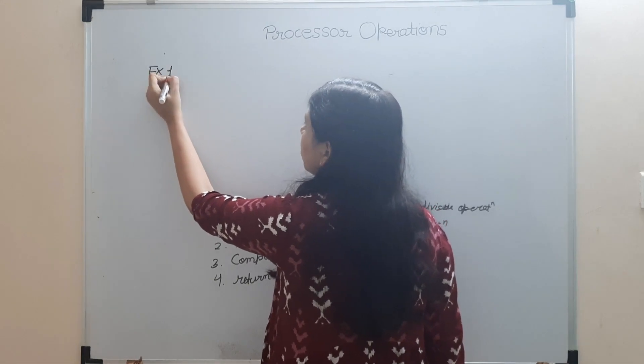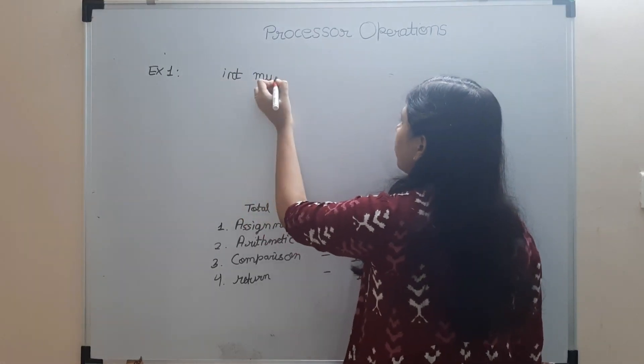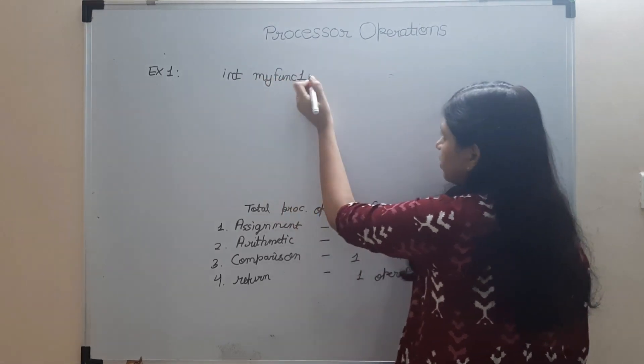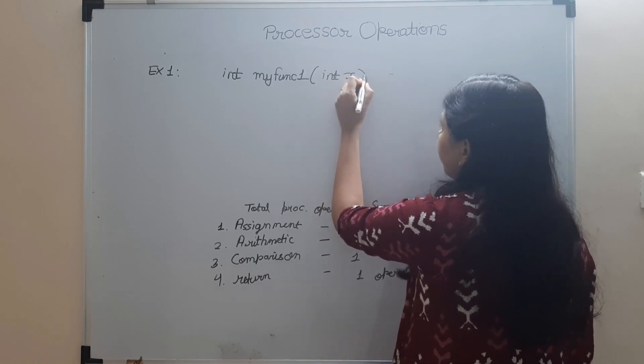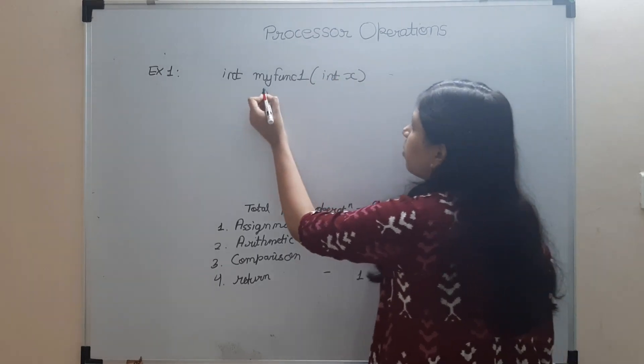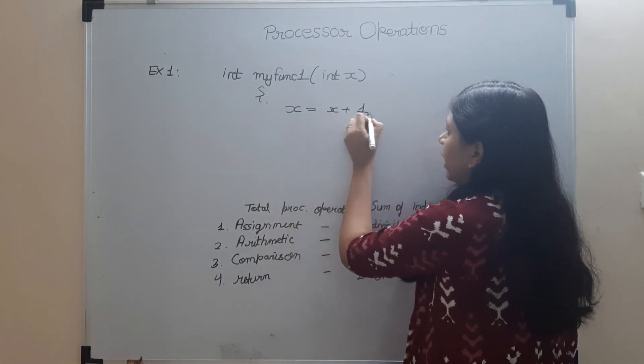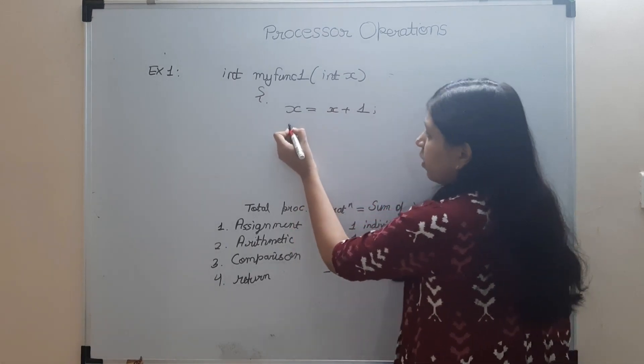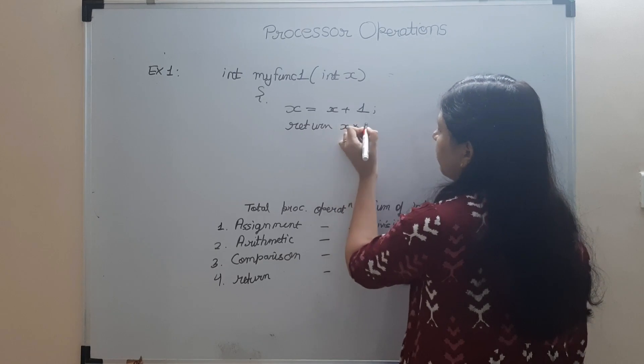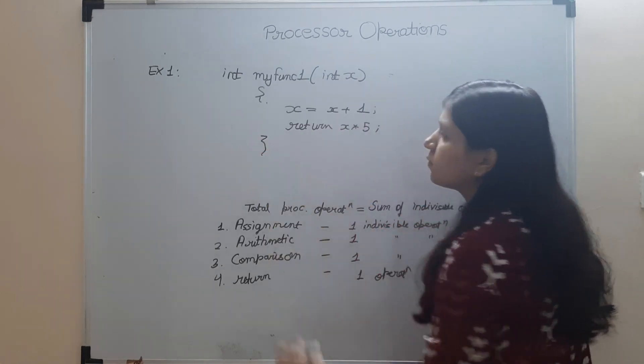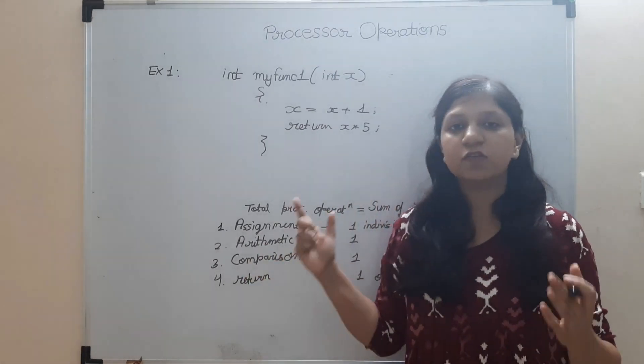First example I am going to take. In my function, let's say myFunc1 is the name of my function, and I am passing it a variable x. What it is going to do? It is going to do x = x + 1, then I am going to return x * 5. That's it, this is my function. Find out the number of processor operations that it is going to take.